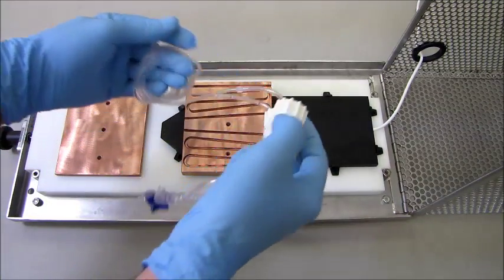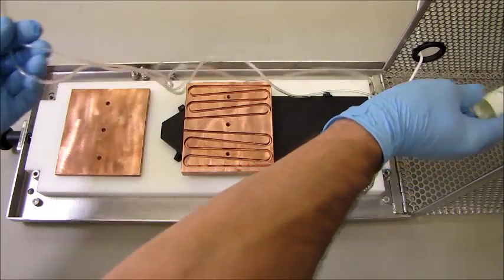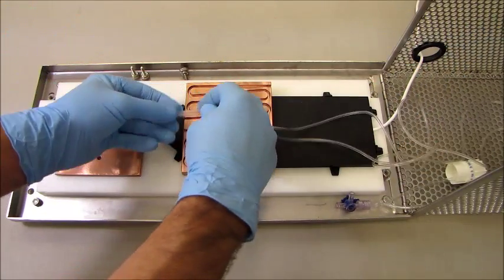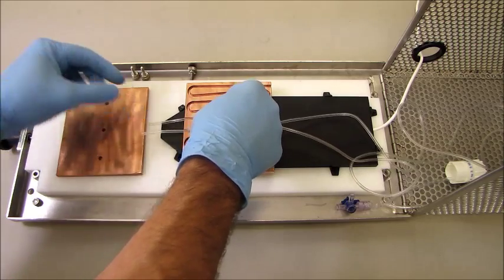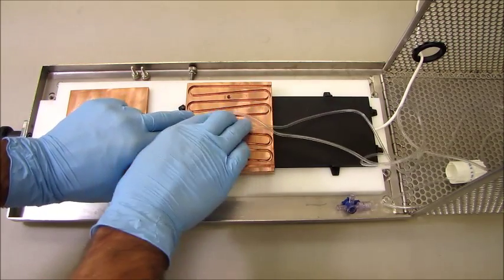The next step is to route the tubing from the flow control assembly through the grooves in the bottom of the copper heat exchanger. Allow approximately three inches of tubing to extend from the heat exchanger.